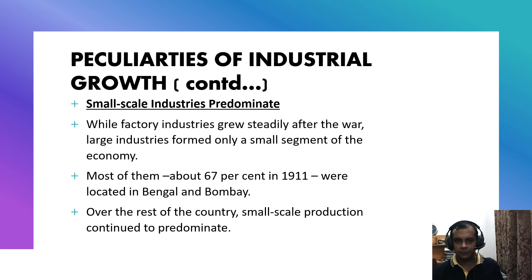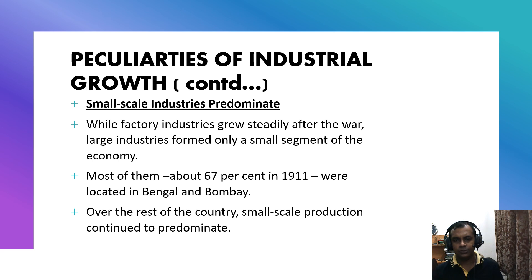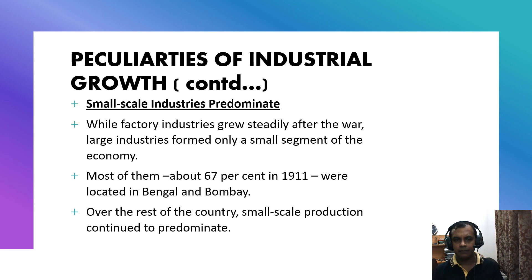Particularly with the peculiarities of industrial growth, the most important aspect was that small-scale industries began to predominate. While factory industries grew steadily after the First World War, large industries formed only a small segment of the economy. Most of the economy — about 67% in 1911 — was concentrated in Bengal and Mumbai (at the time called Bombay). Over the rest of the country, small-scale production continued to predominate.